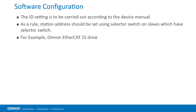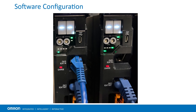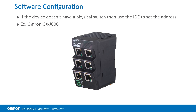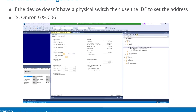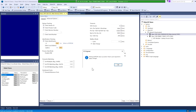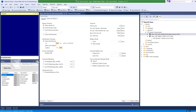Follow the device manual to configure the slave ID. In general, if the EtherCAT devices have a physical switch, it is best to use them for setting up the slave ID — for example, the OMRON 1S drive with rotary switches. If the device doesn't have a physical switch, such as the OMRON JC06 junction slave, then use the IDE to set the address. Enter the desired address under check identification, select write to EEPROM, and restart the device. Issue ECAT slaves to verify the new address.